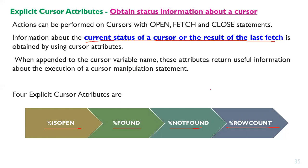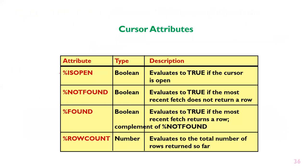There are four explicit cursor attributes: %ISOPEN, %FOUND, %NOTFOUND, and %ROWCOUNT. The %ISOPEN attribute is of type boolean — it evaluates to true when the cursor is open. %NOTFOUND is also boolean and evaluates to true if the most recent fetch does not return a row. %FOUND is of type boolean and evaluates to true if the most recent fetch returns a row.